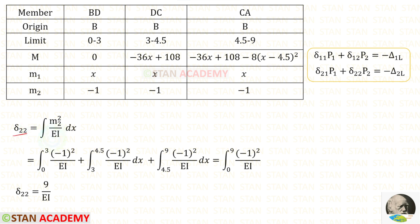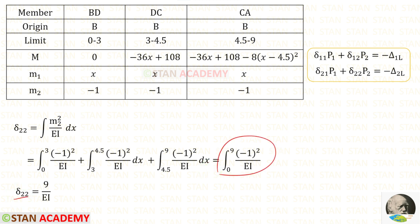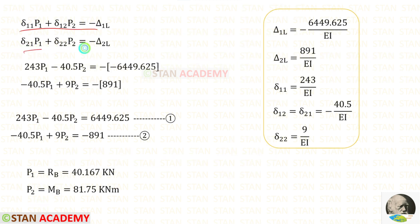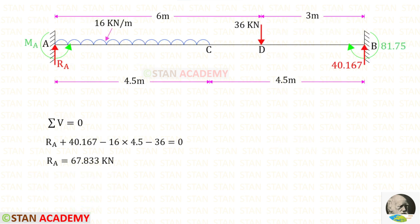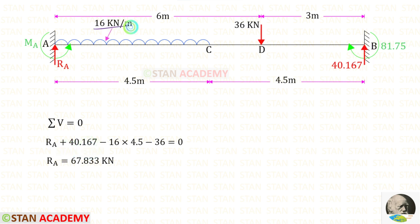Now let us find delta 22. The formula is the integration of M2 squared upon EI dx. Using the shortcut we can easily find delta 22, which is 9 upon EI. Now we have found all of the displacements. Let us apply them to make two equations and solve for Rb and Mb using a calculator. For RB we get 40.167 and for MB we get 81.75. Now let us apply sigma V equals 0 to find RA. RA and RB are both acting upwards so they are positive. The UDL and point load are downwards and negative.